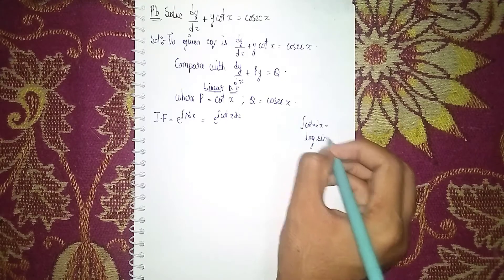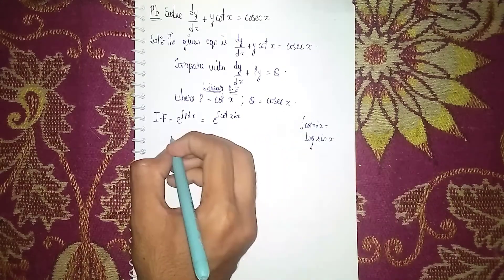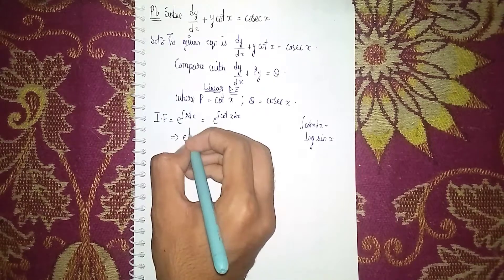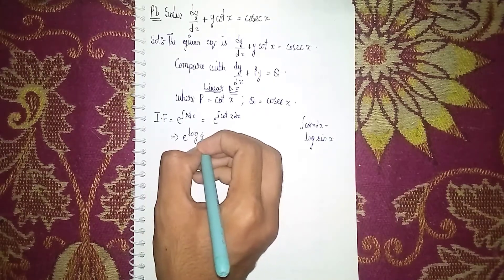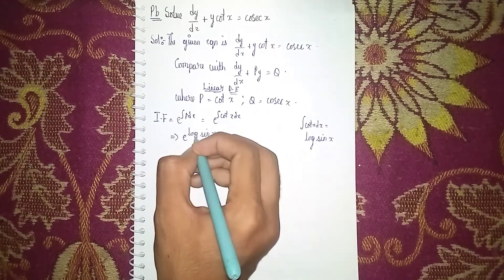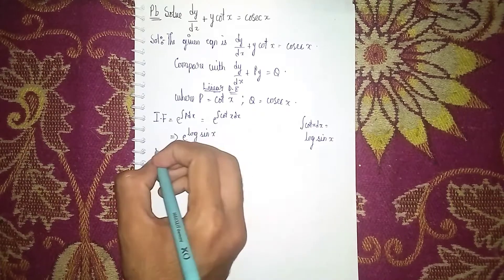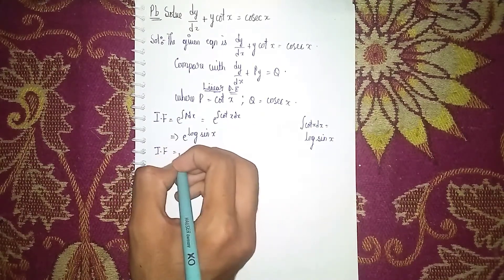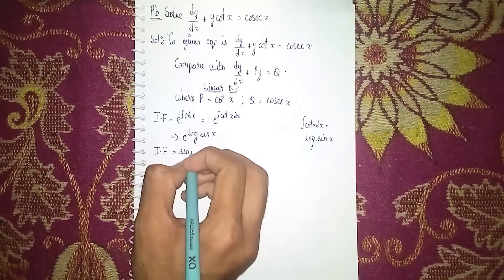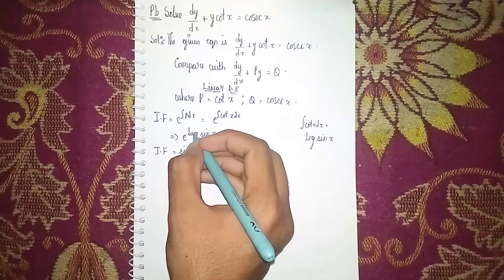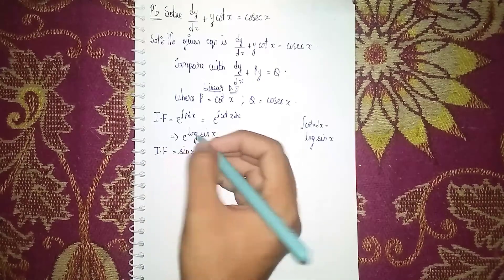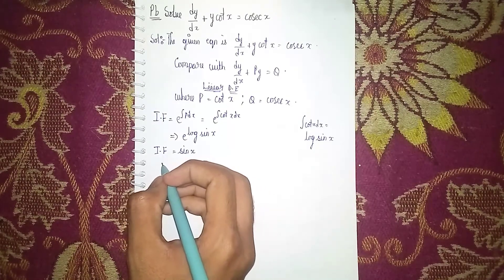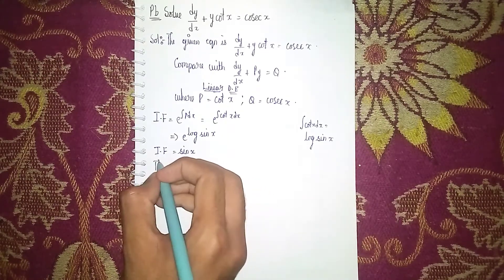Integrating cot(x) dx gives log of sin(x). So the integrating factor becomes e to the power of log of sin(x). Since e and log cancel each other, the integrating factor is sin(x).